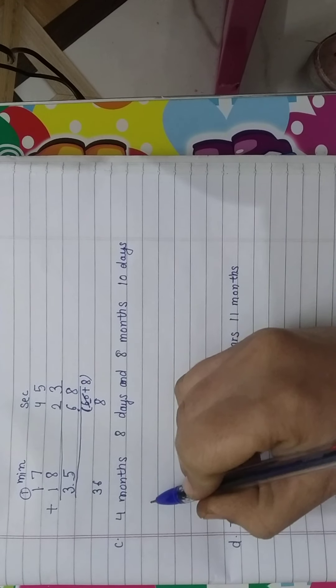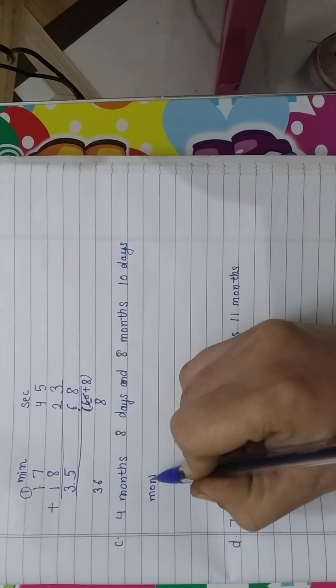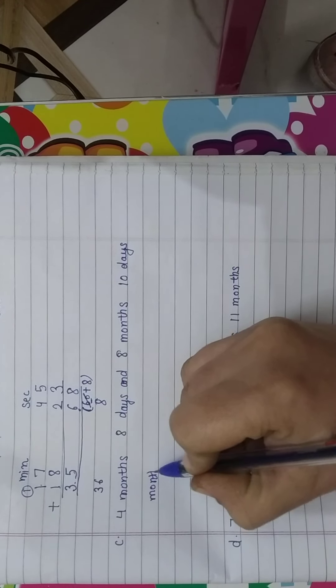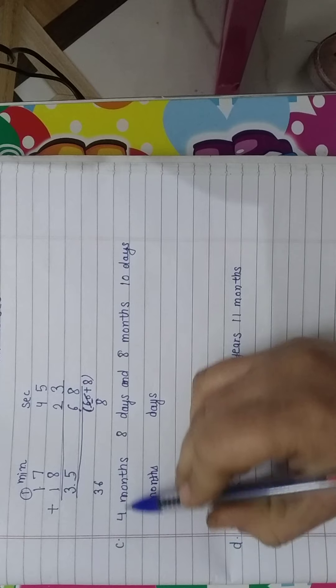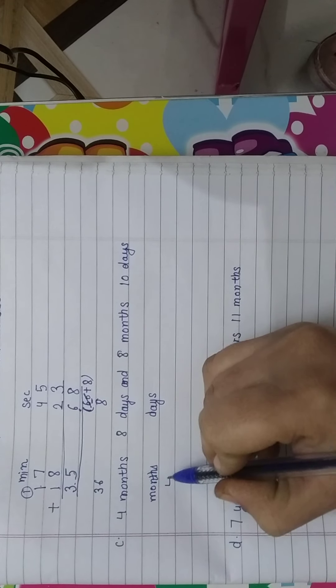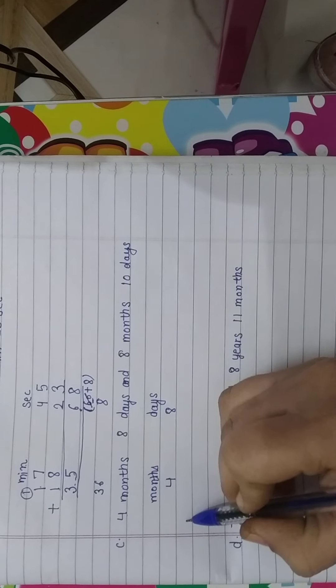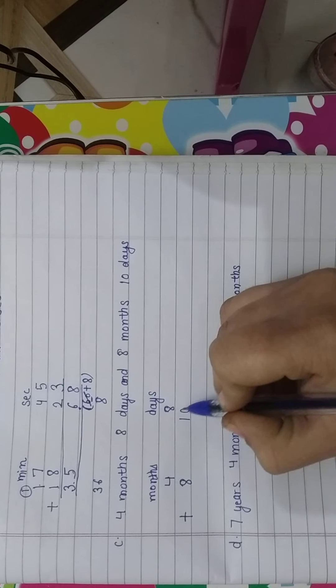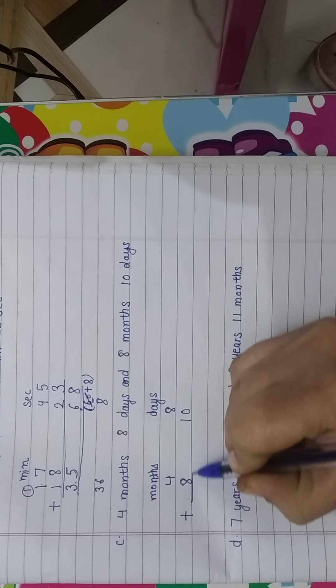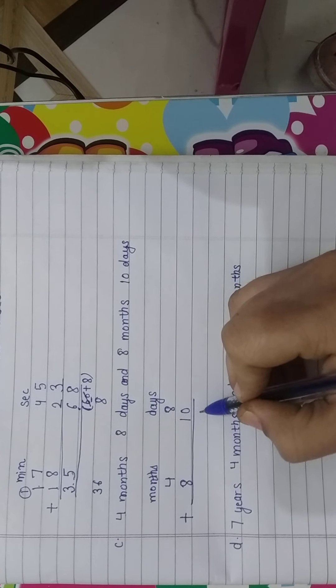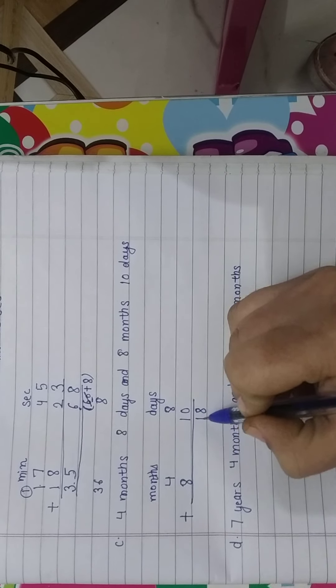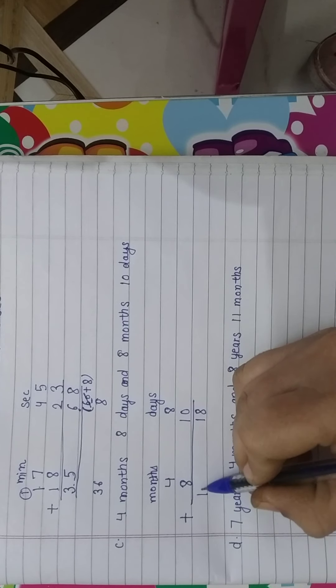Next is given in months and days. Write 'months' here and 'days' here. 4 months 8 days and 8 months 10 days. Now add it: 8 plus 0 is 8, 1 remains the same, and 4 plus 8 is 12.